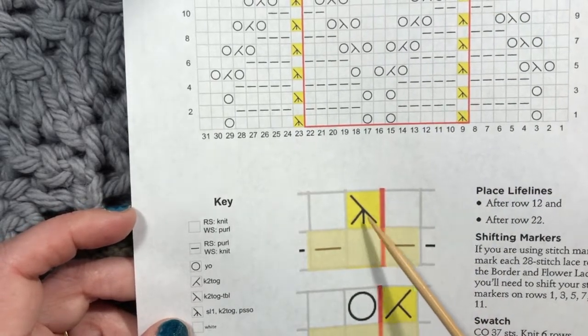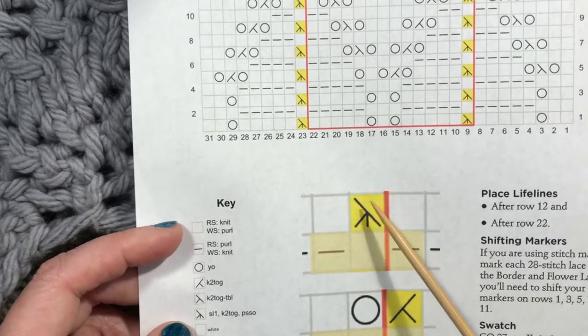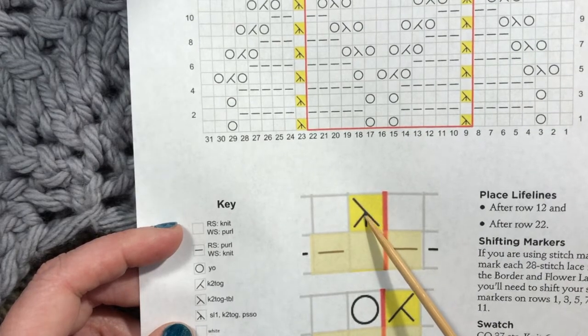Well, because you're gonna have to take out that marker to work this decrease. And look at this symbol. We're taking three stitches and making it into one stitch. That's part of what this symbol shows.